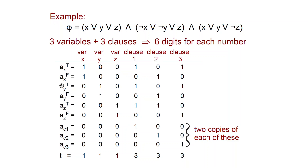The same construction applies for the other variables. Ay_true has a one for the y digit, zero in the other variable digits, and ones where y appears unnegated — in clauses one and three. These numbers correspond to variables. Then there are the technical numbers corresponding to clauses: for clause one, ac1 has a one in the clause-one digit and zero everywhere else, and we include two copies. Similarly for ac2 and the rest. Finally, the target t has a one in every variable digit and a three in every clause digit.